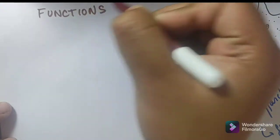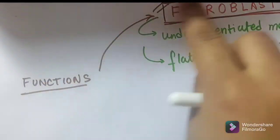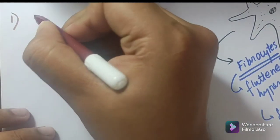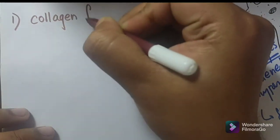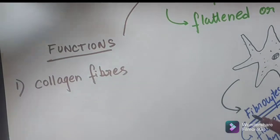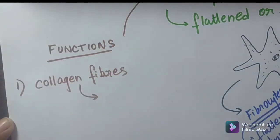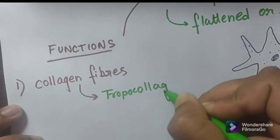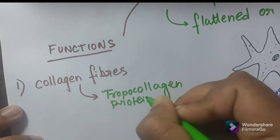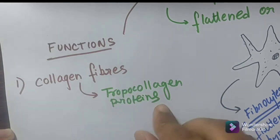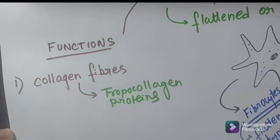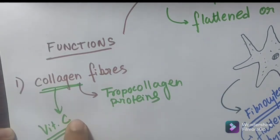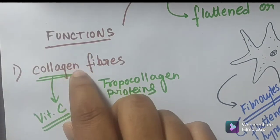Now let's discuss the functions of fibroblasts. First, fibroblasts help in the formation of collagen fibers by synthesizing an important protein known as tropocollagen. These tropocollagen proteins are important while synthesizing collagen fibers, and they set free these materials in the extracellular space. Collagen formation is generally impaired in vitamin C deficiency, so vitamin C is a vital component for the formation of collagen fibers.